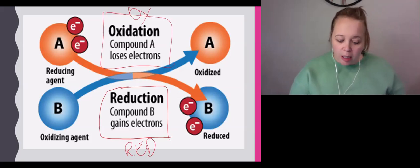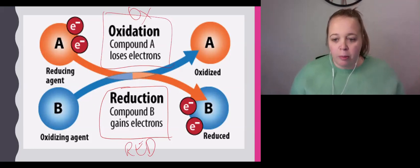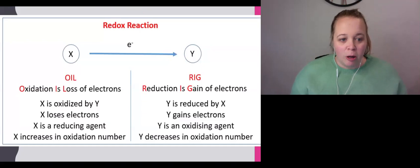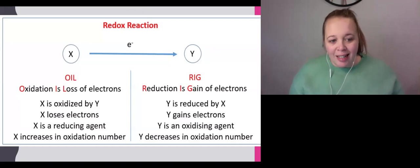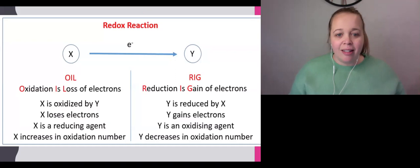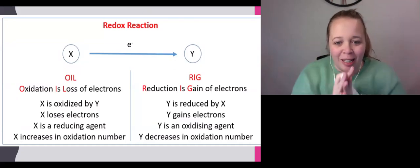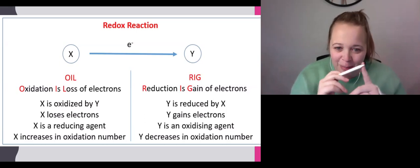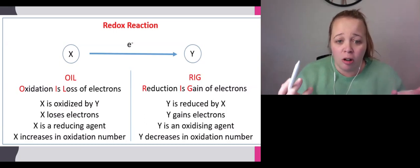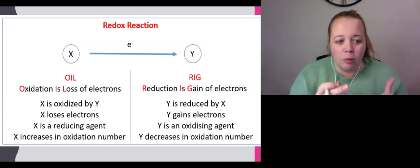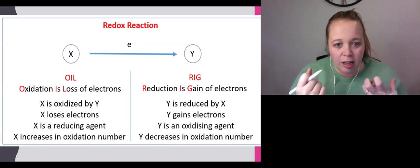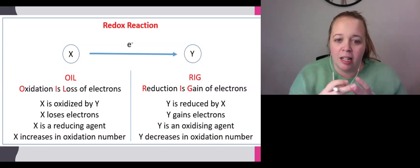What do these mean? We're going to use a mnemonic: oxidation is loss, OIL, and reduction is gain, RIG. OIL RIG is our mnemonic we write at the top whenever we think about redox. If the element loses an electron, it's gone through oxidation and it's called a reductant or reducing agent.